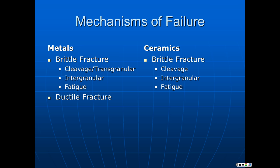Ceramics really only undergo brittle fracture — there is no ductile failure mechanism for ceramics. They can be less brittle and absorb more energy, but the basic mechanisms are very similar: they're going to look like cleavage, you may get intergranular fracture in polycrystalline ceramics, and they're subject to fatigue. Today we're not going to talk about fatigue — we will focus on that next week. Fatigue is a brittle fracture, so if you come to a broken metal part that is macroscopically brittle, you have three possible mechanisms: cleavage, intergranular fracture, or fatigue.